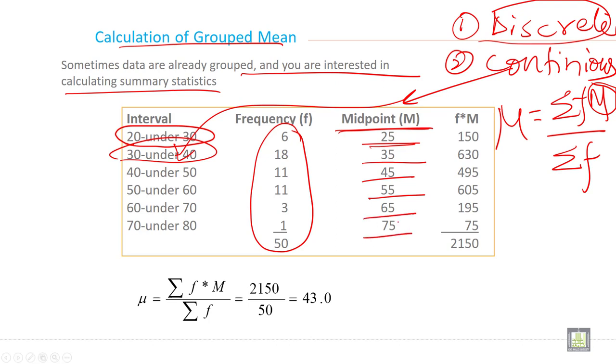When you complete the midpoints, multiply frequency with midpoint. Here, 6 times 25 and write it here. Then 18 times 35 and write it here. Then 11 times 45 and write it here, and so on. At the end, you add all these f times m values. You will get 2150 and now put this value in the formula.